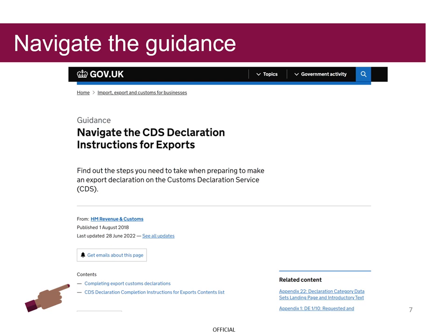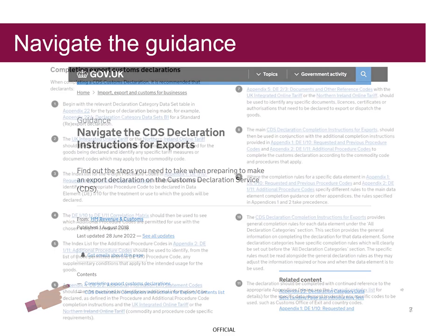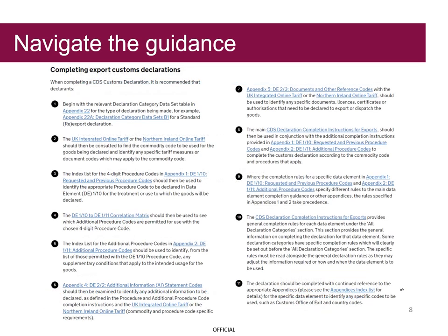To identify the commodity code, Grayson needs to ensure he is on the Navigate the CDS Declaration information instructions for exports homepage. If Grayson scrolls down, he will see the 11 steps he needs to follow.